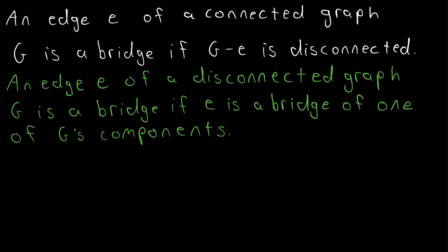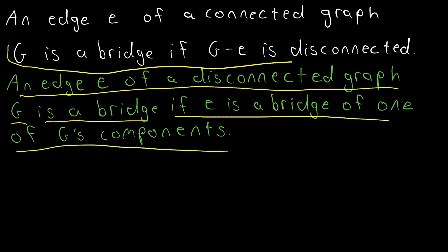So the idea of a bridge is analogous to cut vertices except with edges. Now let's read through this—this is the definition of a bridge for a disconnected graph. An edge E of a disconnected graph G is a bridge if E is a bridge of one of G's components. The components of a disconnected graph are, by definition, connected, so that just brings us back to the standard definition of bridges in connected graphs.